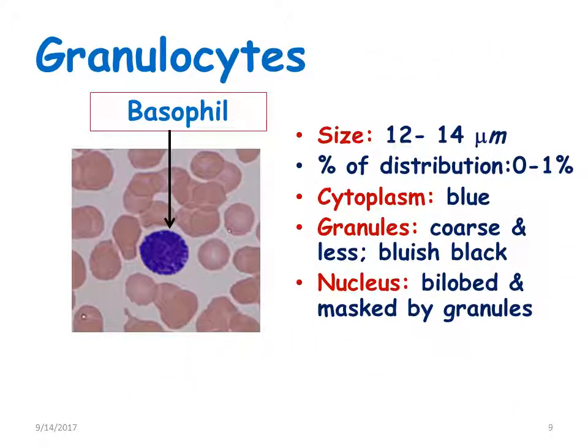The next granulocyte is the basophil. They also have a similar size of 12 to 14 micrometers, with a percentage distribution of 0 to 1%. The cytoplasm is blue in color. The granules are coarse, less in number, and bluish-black. The nucleus is bi-lobed and generally masked by the granules.